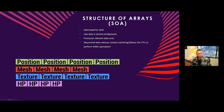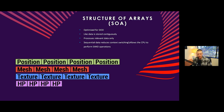Sequential data also reduces context switching and allows the CPU to perform SIMD operations — Single Instruction, Multiple Data. This is an optimization the CPU can make when you use the burst compiler. Going back to the example of adding values to every position component: we can actually combine those all together into a single instruction in the CPU and process multiple data points together.